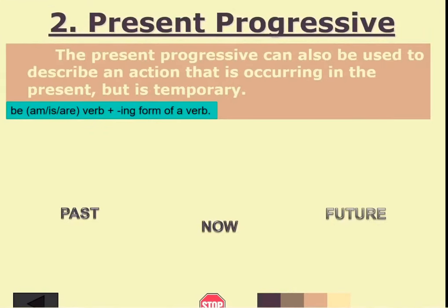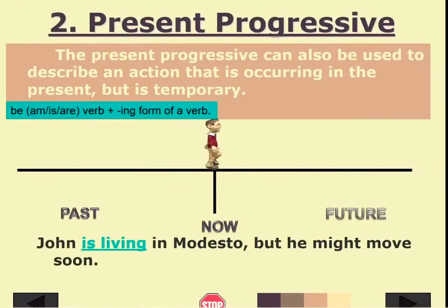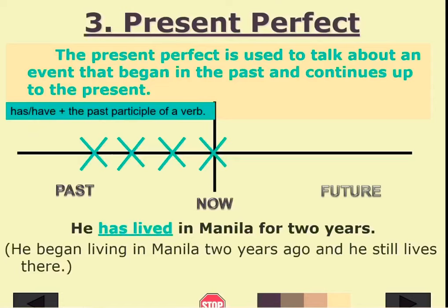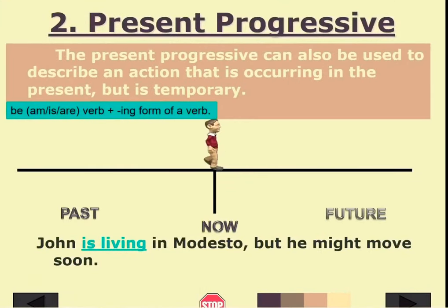Present progressive can also be used to describe an action that is occurring in the present but is temporary. For example: 'John is living in Modesto but he might move soon.' The action is happening now but it is only temporary.